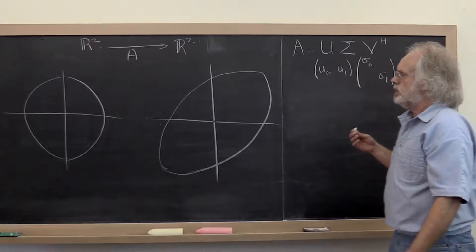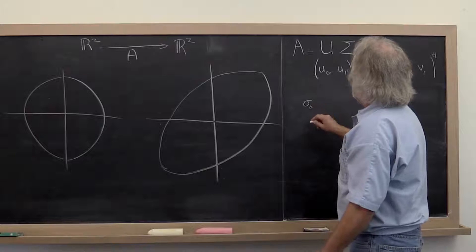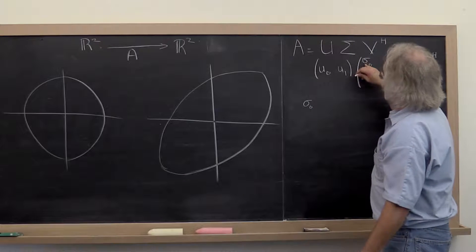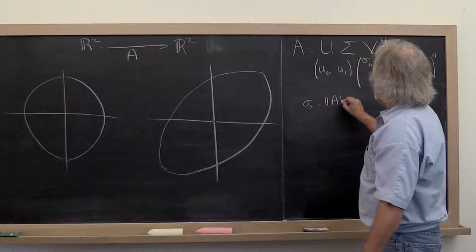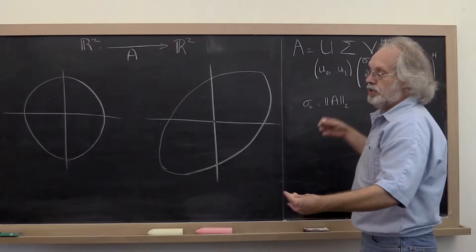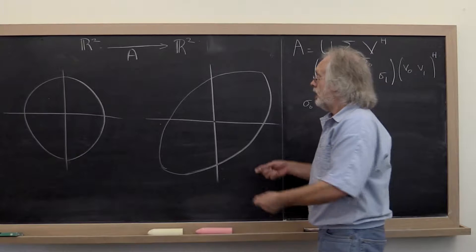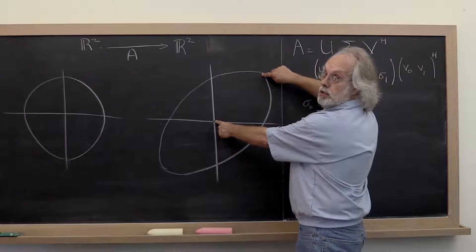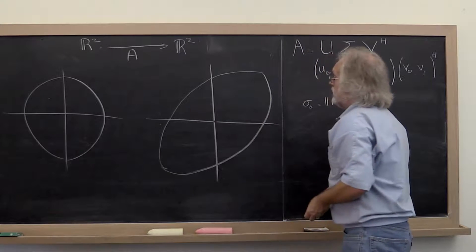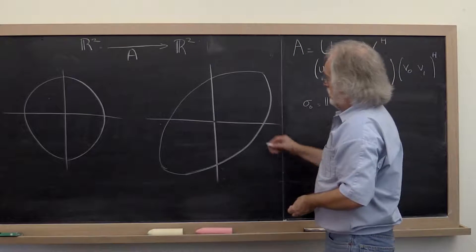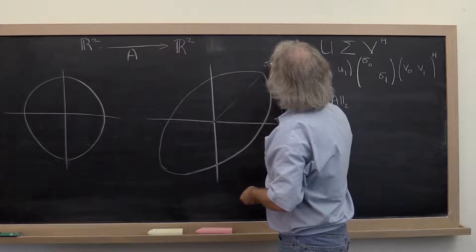The 2-norm of A would be Sigma0, the largest singular value. Notice that that is the maximal magnification of a unit vector — this is the maximal magnification. So this distance right here is really Sigma0.